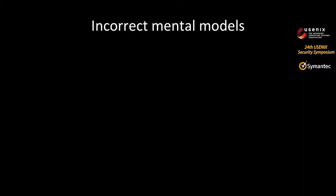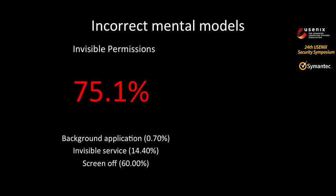One thing an average user might expect is to see the application running visibly when it accesses these resources. But what we found from our study is that 75% of the time, their expectations are defied — three quarters of all permissions we logged were requested by applications either running invisibly as a service or when the screen was off. For the remaining quarter, the user had a contextual or visible cue that the application was running, either by directly using it or through a visible indicator like a music player in the background.